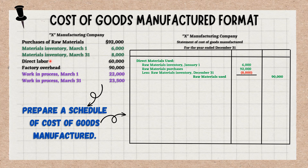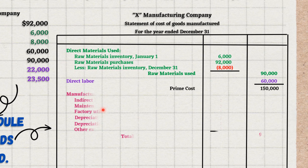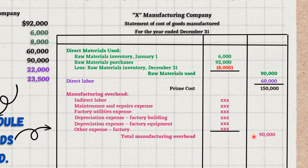After that we have direct labor of $60,000. We will add that with the raw materials used, which gives us a prime cost of $150,000. The total manufacturing overhead is $90,000. If we add total manufacturing overhead and prime cost, that gives us a total manufacturing cost of $240,000.